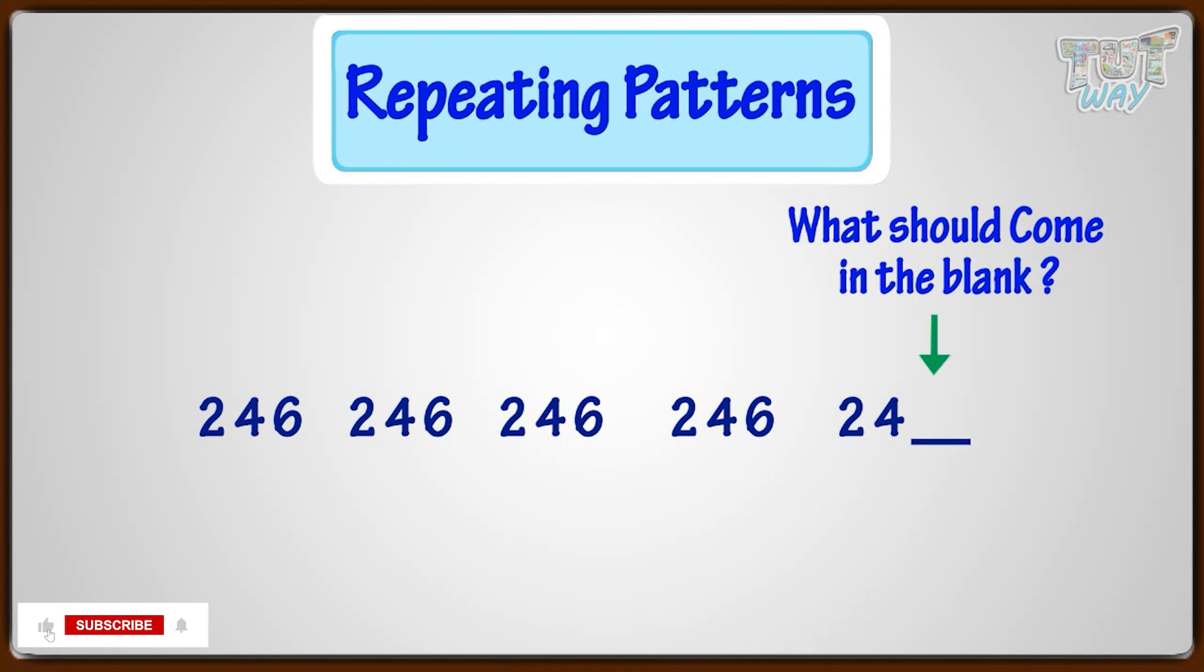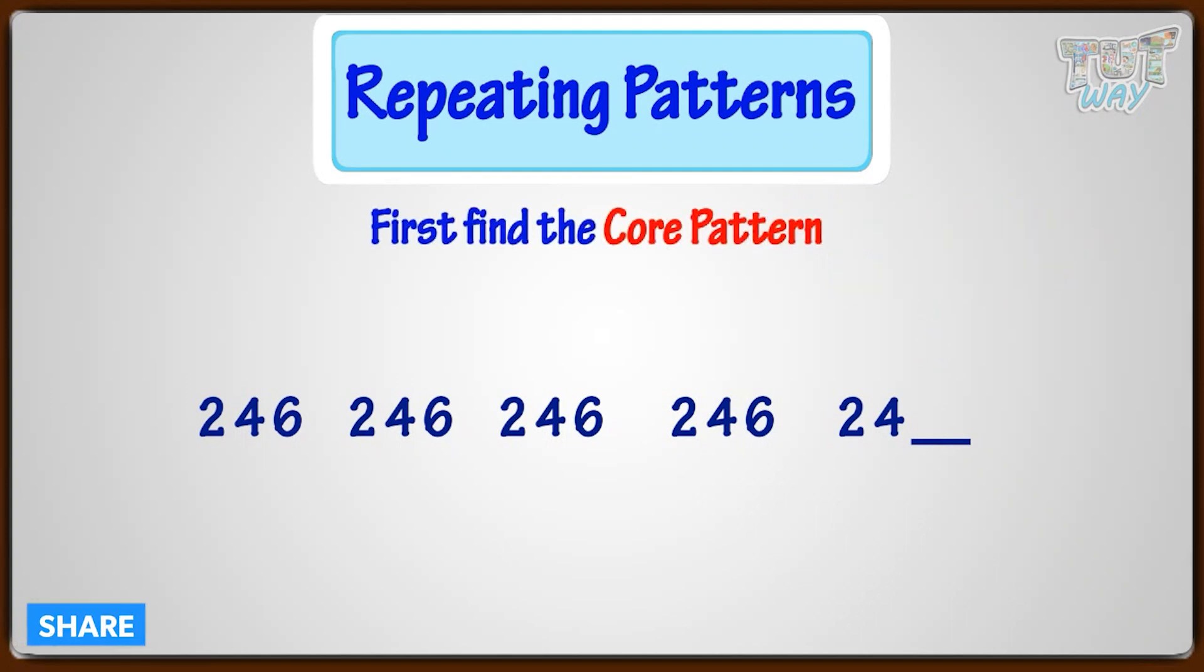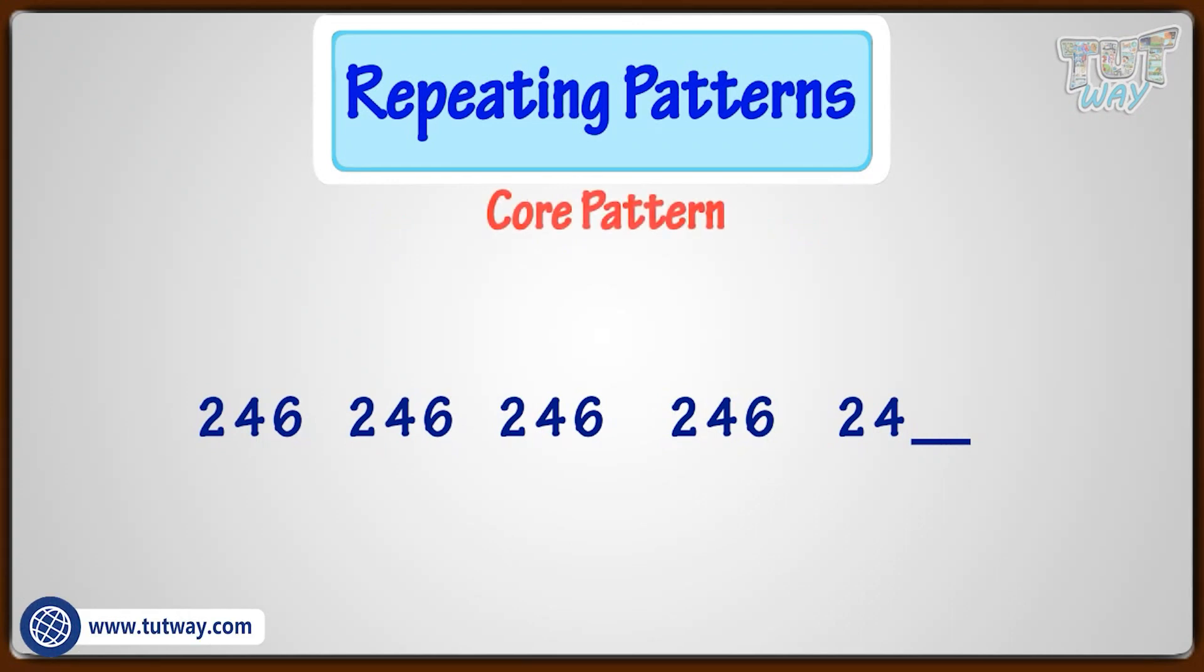In any repeating pattern, we first find the core pattern, that is the term that's getting repeated, and then we can repeat it any times to grow the pattern. Here the core pattern is 2, 4, 6.